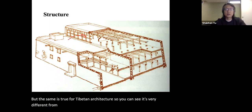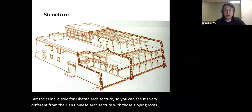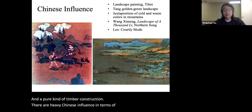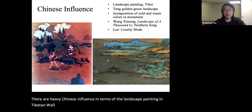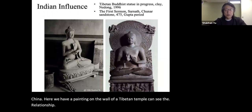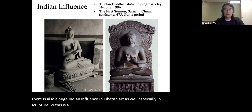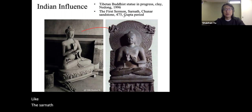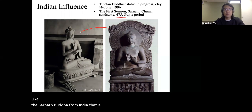There is heavy Chinese influence in the landscape painting in Tibetan wall decoration. Here we have a painting from Song Dynasty China, and here a painting on the wall of a Tibetan temple — you can see the relationship. There is also huge Indian influence in Tibetan art, especially in sculpture. This is a sculpture taken in 1996 where a monk was sculpting a Buddha that looks almost exactly like the Sarnath Buddha from India, about 1,500 years earlier.